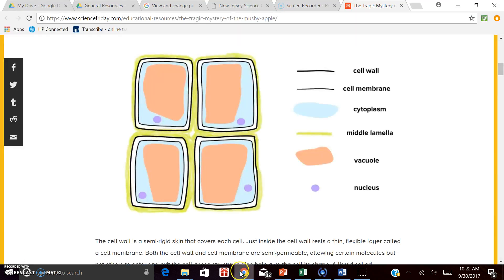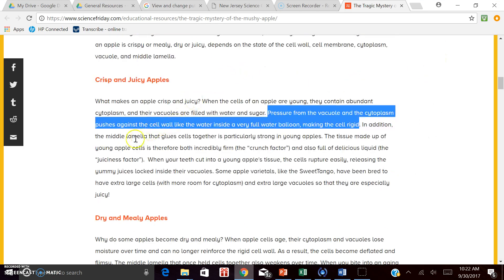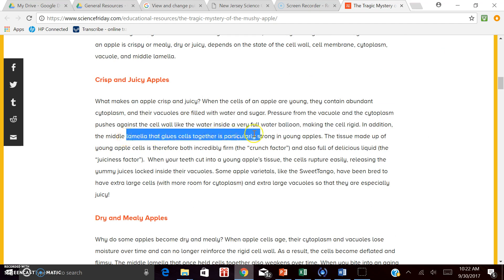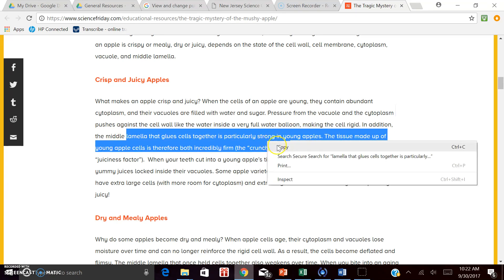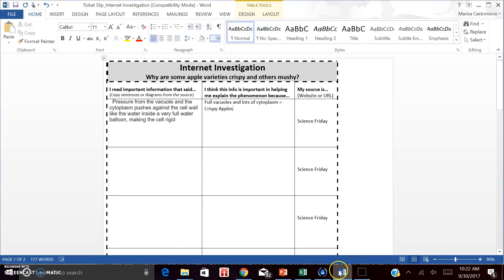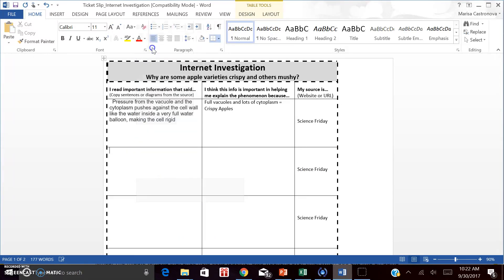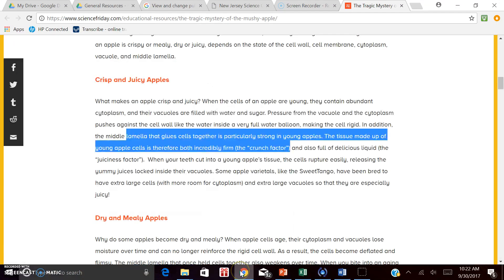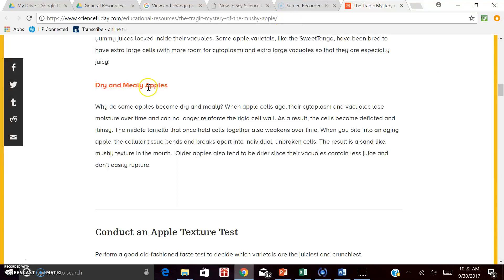I also found another sentence important. And that's when they were talking about the lamella. They said that the lamella in young apples was particularly strong and it gave the apple a crunch factor. So I'm going to take this information, copy it into my slip, and I can interpret that as a strong lamella equals a crisp apple. Let's move on to the next paragraph, Dry and Mealy Apples.